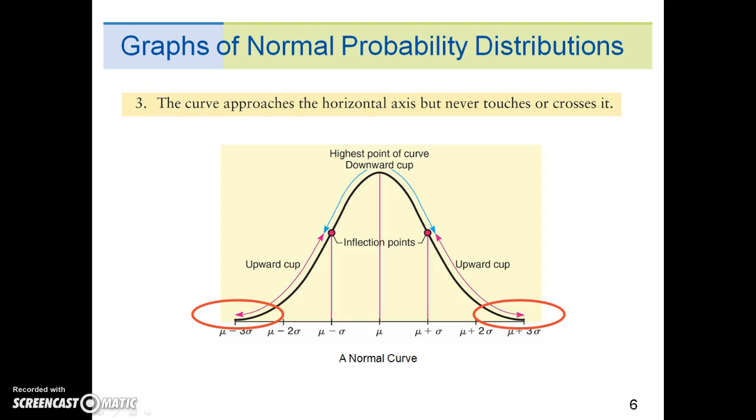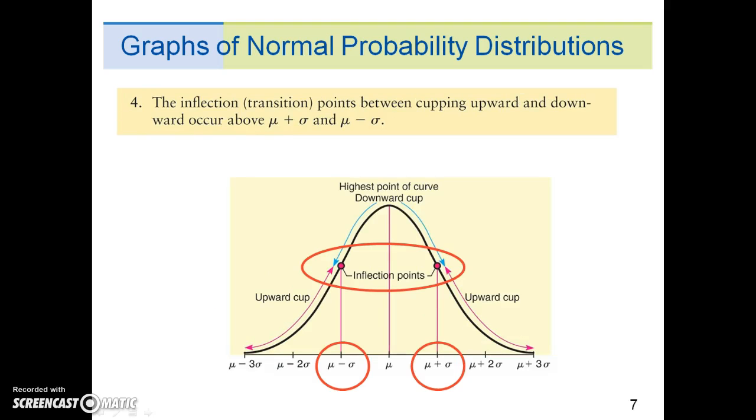Third, the curve approaches the horizontal axis but never touches or crosses it. Fourth, the inflection or transition points between curving upward and downward occur at mu plus sigma and mu minus sigma.